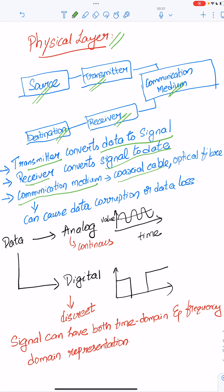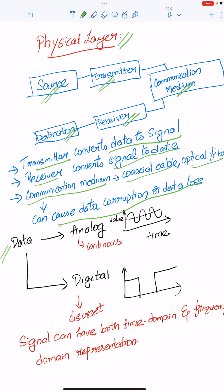Examples are coaxial cable, optical fiber. Communication medium can sometimes cause data corruption or data loss. Two types of data: analog data and digital data. Analog data is continuous, digital data is discrete.